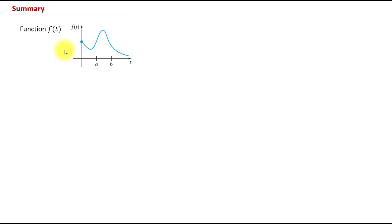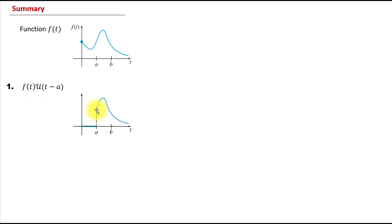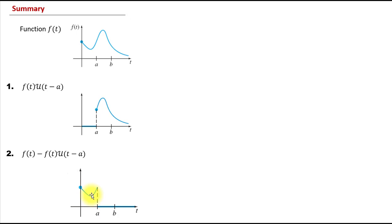Let's summarize and generalize what we've learned using an arbitrary function f of t and its graph. When we multiply f of t by the unit step function at a, the function f of t gets turned on at value a — up to that point the product is 0, and then at a, f of t turns on. For the function f(t) minus f(t) times the unit step function at a, it's the opposite: f of t is turned off at a. We see the portion of f up to a, then 0 after. Similarly, if the unit step function is at b, f of t is turned off at b instead.